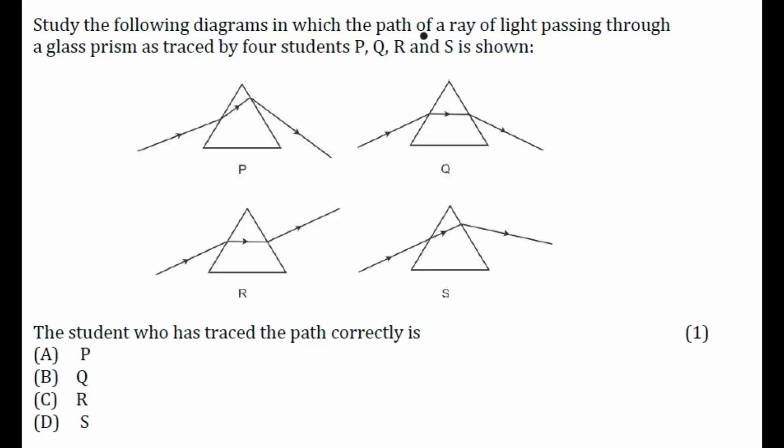Study the following diagrams in which the path of ray of light passing through a glass prism as traced by four students P, Q, R, and S is shown. Different students traced ray of light passing through a glass prism. The student who has traced the path correctly - so we have to find out who traced the path correctly.